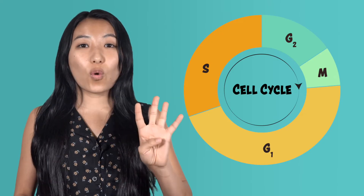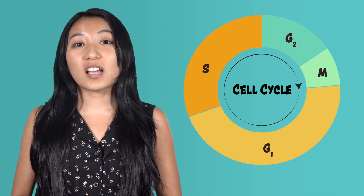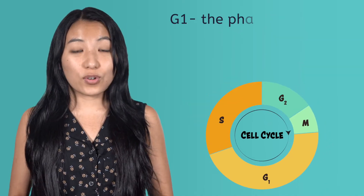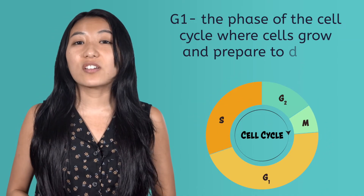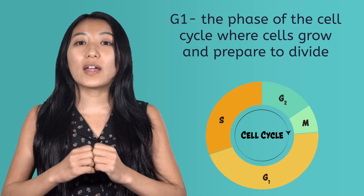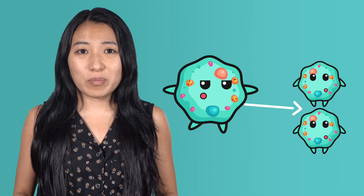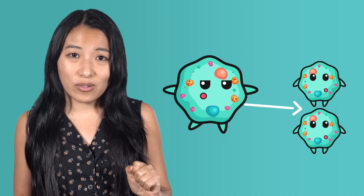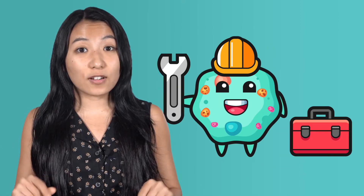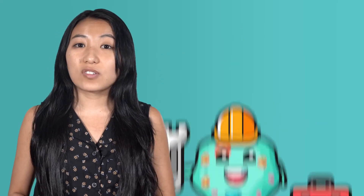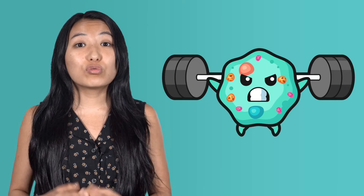The cell cycle has four distinct phases, and the first we will discuss is G1. G1, or the first gap phase, is the phase of the cell cycle where cells grow and prepare to divide. If cells just divided in half without growing, we'd end up with tiny and ineffective cells. Because of this, cells in G1 are essentially eating for two as they prepare for division, building a whole new set of organelles, or working parts, and doubling their cytoplasm. This can take up to 10 hours, making G1 the most time-consuming phase of the cell cycle.